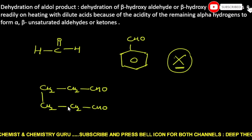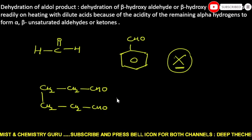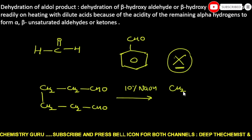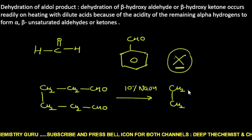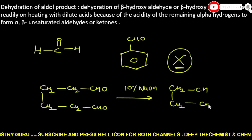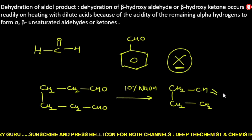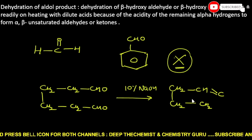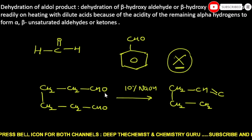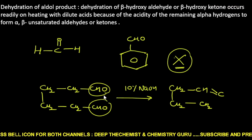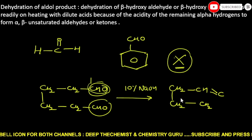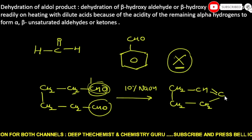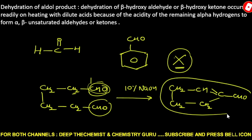Consider a molecule hexane-1,6-dial. When it reacts with ten percent sodium hydroxide, intramolecular aldol condensation occurs. The carbon forms a double bond internally, and the aldehyde group attaches accordingly, giving an intramolecular aldol product.